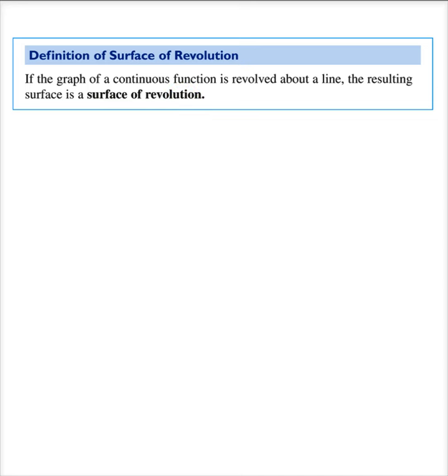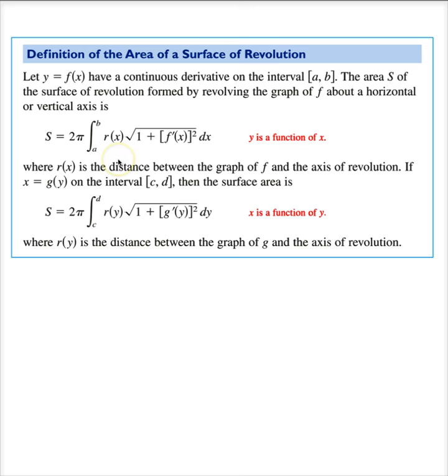The formula is actually quite straightforward. The surface area is 2π times the integral from a to b of r, where r is the distance to the curve, times the square root of 1 plus f'(x) squared dx. Or we can do it in y.